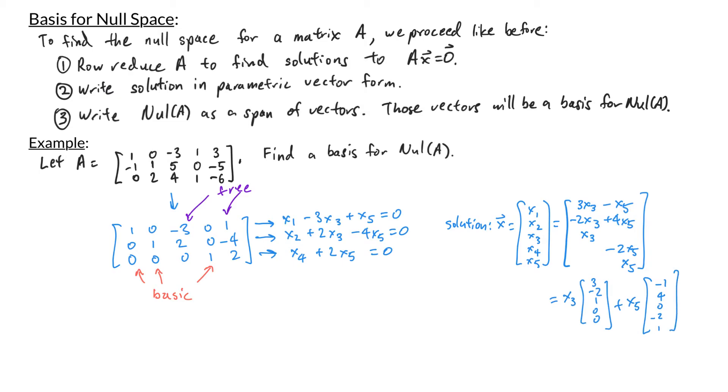Once we have our solution in parametric vector form, we can see that the null space of A is equal to the span of the vectors 3, negative 2, 1, 0, 0, and negative 1, 4, 0, negative 2, 1.